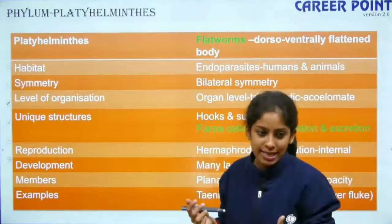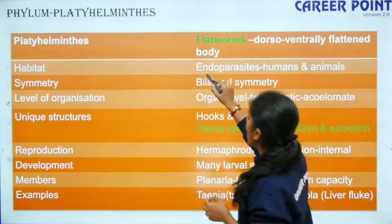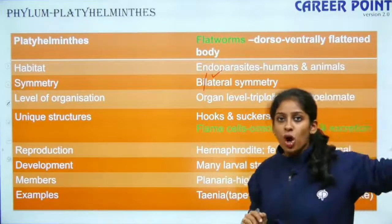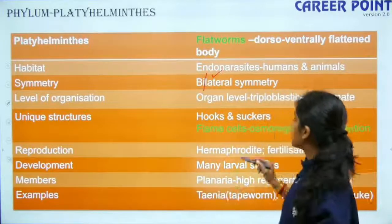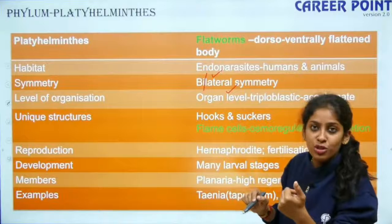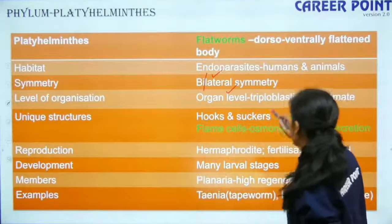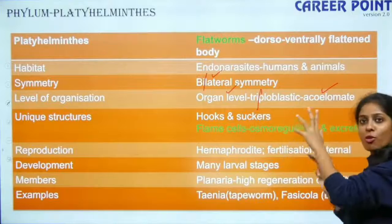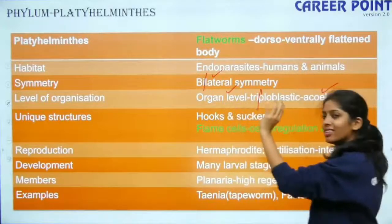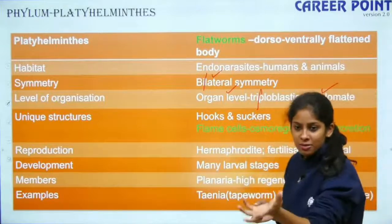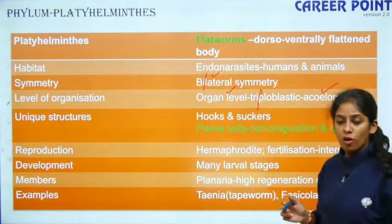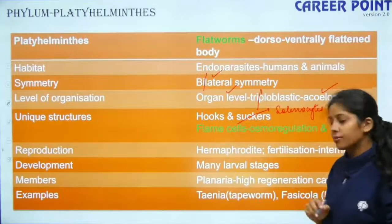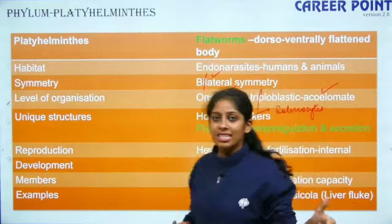Next is Phylum Platyhelminthes. They are usually very flat, which is why they are called Platyhelminthes. They have bilateral symmetry — so from radial symmetry we have now moved into bilateral symmetry, and henceforth all phyla will have bilateral symmetry. They have organ level organization and are triploblastic, but still acoelomate. They have flame cells for osmoregulation, also known as solenocytes.